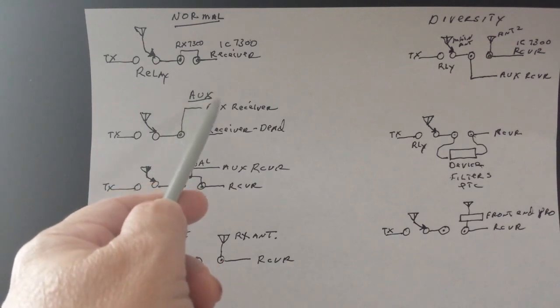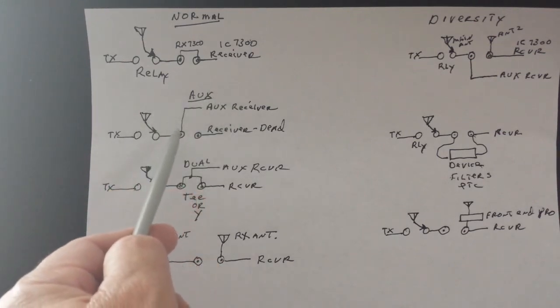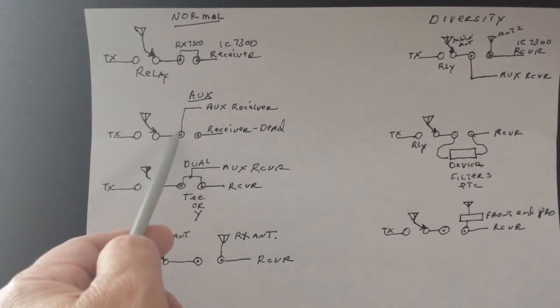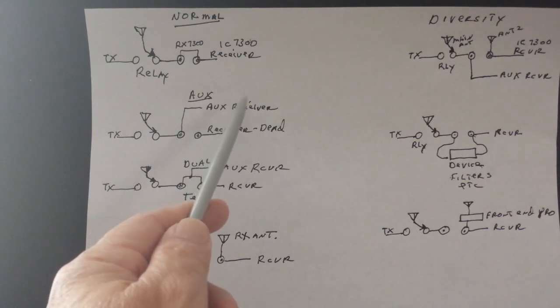Then if we go to the next one here, with this we can have an auxiliary receiver. And here we take our jumper out, we run a cable from the RCA jack, and this would be, if you're looking at the back, this would be the one on the right to an auxiliary receiver.